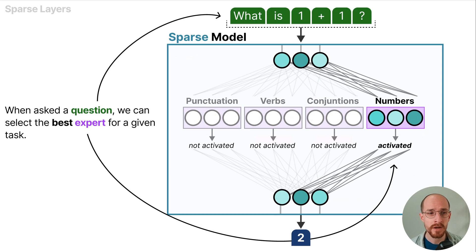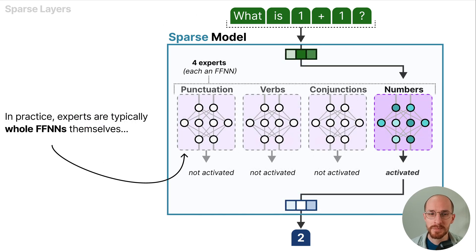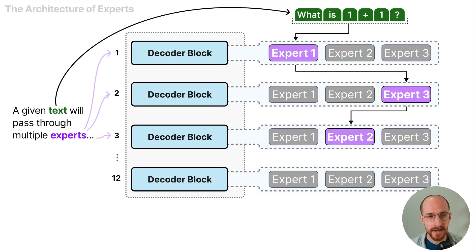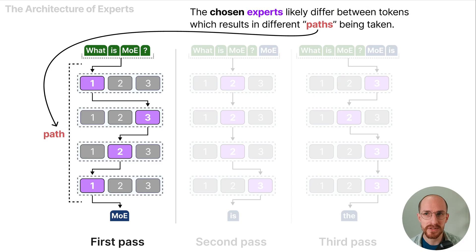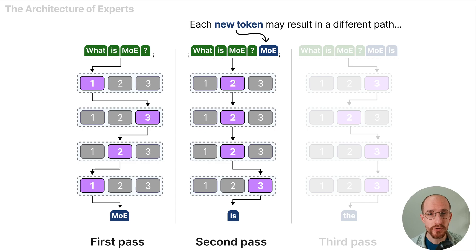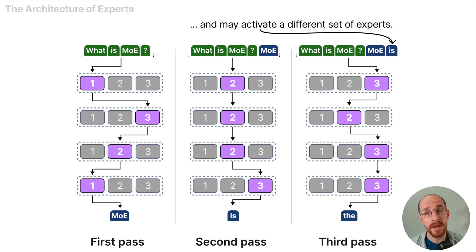When asked a question we can select the best expert for a given task. In practice experts are typically whole feed forward neural networks themselves and not just pieces of a hidden layer. A given text will pass through multiple experts before the output is generated. The chosen experts likely differ between tokens which results in different paths being taken.